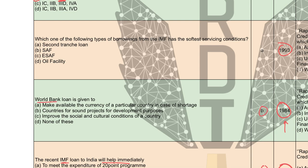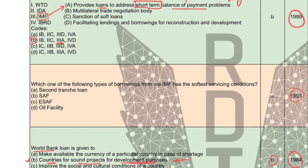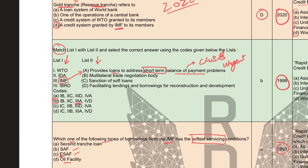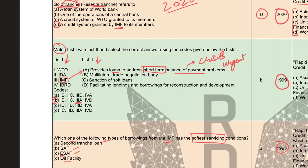Looking at the 1984 question, the answer is B. This time it is not on IMF but on World Bank — another big financial institution that gives loans. World Bank loans are given to countries for sound projects for development purposes. So in the IMF case, loans resolve balance of payment crises; in the World Bank case, loans are for developmental purposes. The 1993 question asks which borrowing from IMF has the softest servicing conditions — second tranche loan, SAF, ESAF, or oil facility. The word 'tranche' connects it to the 2020 question, showing how PYQs are interrelated.